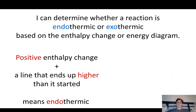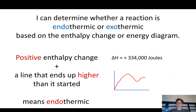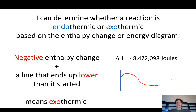So you should have learned how to determine whether a reaction is endothermic or exothermic based on the enthalpy change or the energy diagram. If you have a positive enthalpy change, like positive 334,000 joules, or a line that ends up higher than it started on an energy diagram, then it's endothermic. If you have a negative enthalpy change or a line that ends up lower than it started, that means it's exothermic. I hope this video was helpful.